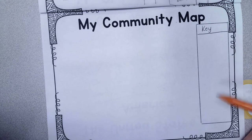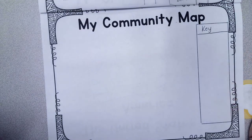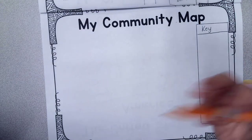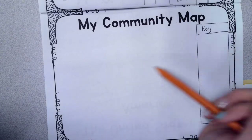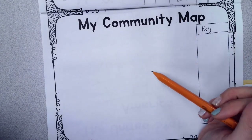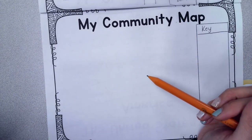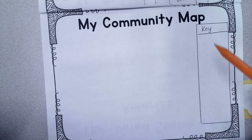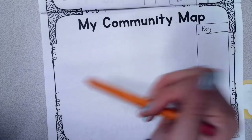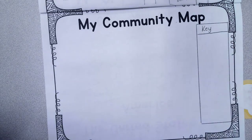When I do this, you can either do it with me or watch for a little bit and then pause it. But we're going to do our community map, which means we're going to think about Abraham Lincoln and put all the things that are around Abraham Lincoln on our map.